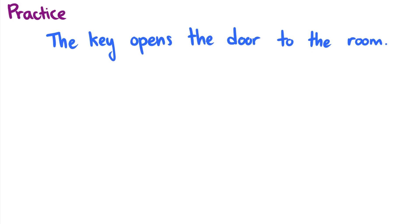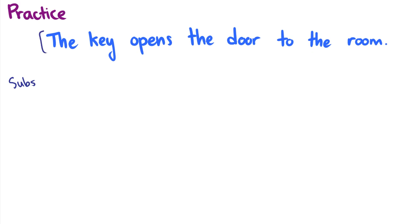Let's do one practice sentence: 'The key opens the door to the room.' We want to find all the constituents. I'm going to rely on the substitution test. First, I'm going to check 'the key' — I think this is a noun phrase, so I'm going to replace it with 'it,' which is another noun phrase: 'It opens the door to the room.' So we do have one constituent here: 'the key.'